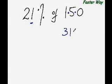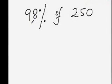So 30 plus 1.5 is 31.5. Now find out what is 98% of 250.